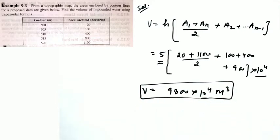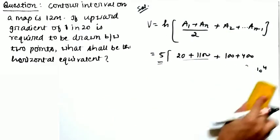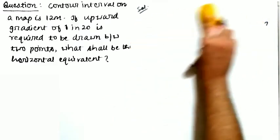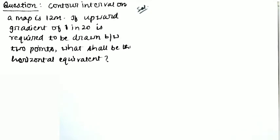You could have solved this with the prismoidal formula as well — just change the formula; the pattern remains the same. The next question is based on contouring: calculate the horizontal equivalent given that the contour interval is 12 meters.